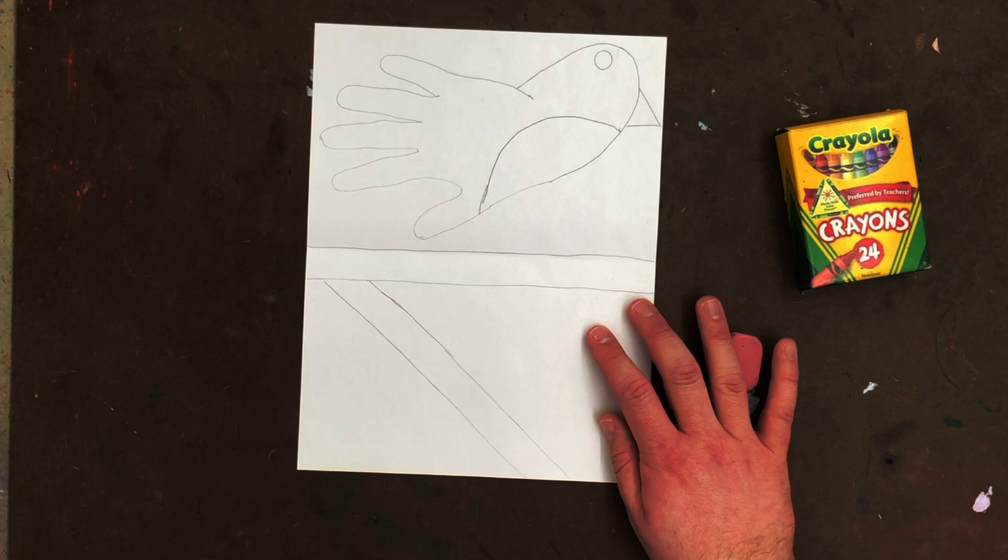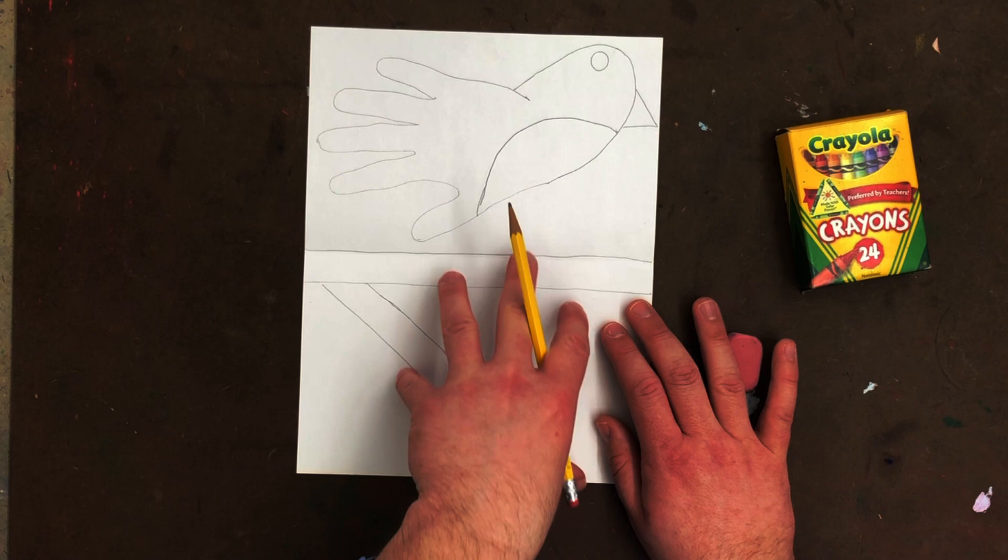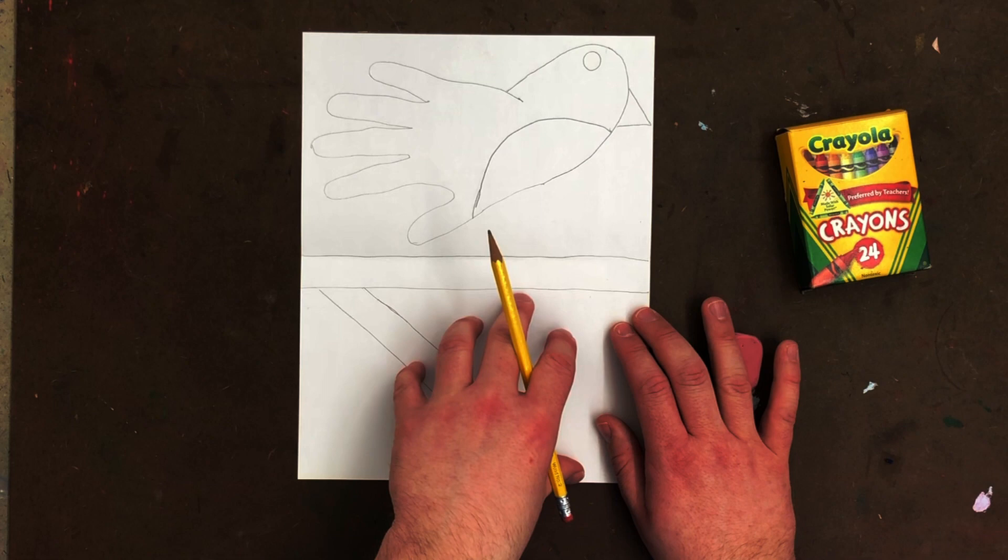So we have a branch here. We have a branch going slanted here. We are going to be putting something in this open space down here next week. This week we're just getting some drawing done and some of the basic coloring done.